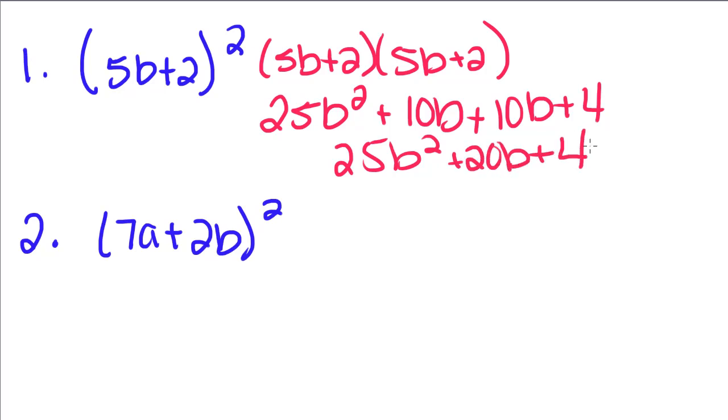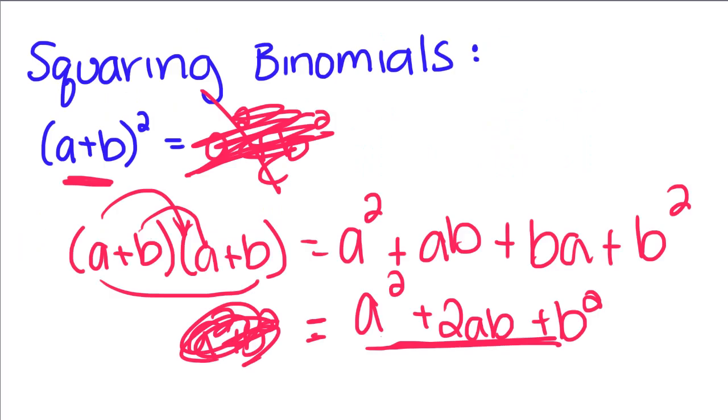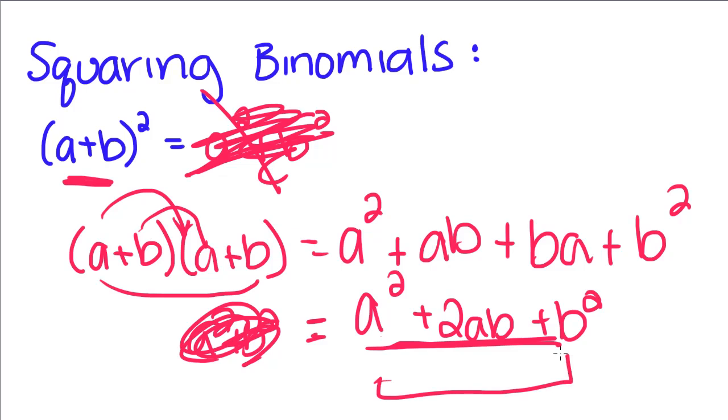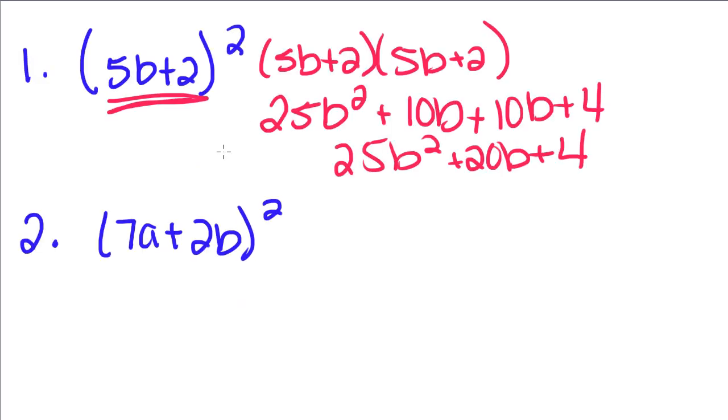So now the shortcut to this is knowing that you're squaring a binomial. You can go back to this formula right here and just follow this step. So you square the first term, so 25b squared. You multiply these two together and you get 10b, and then you multiply it by 2, you get 20b. And then you square this last term and you get 4. So if you can remember the shortcut, it'll save you a little time. But if you can't, then just FOIL it out like you would FOIL out a normal binomial.